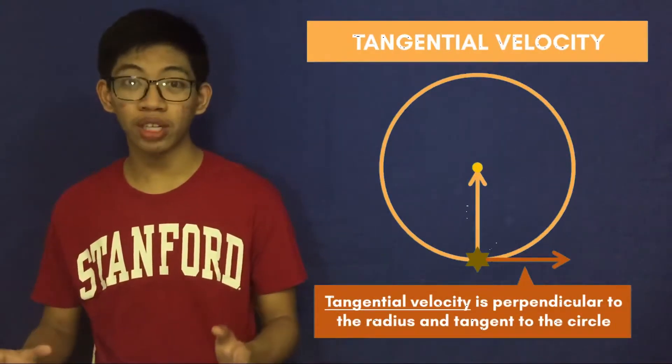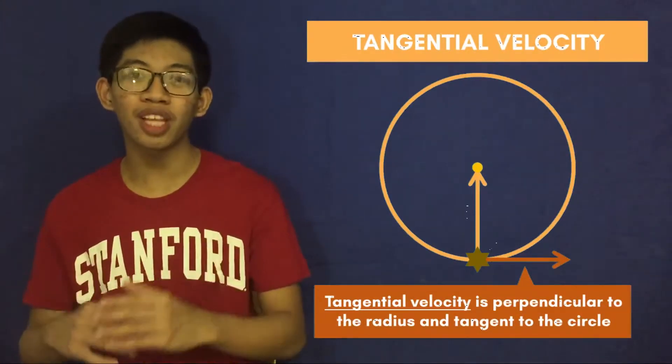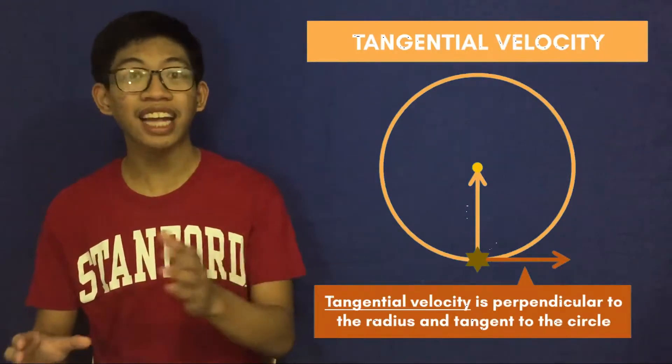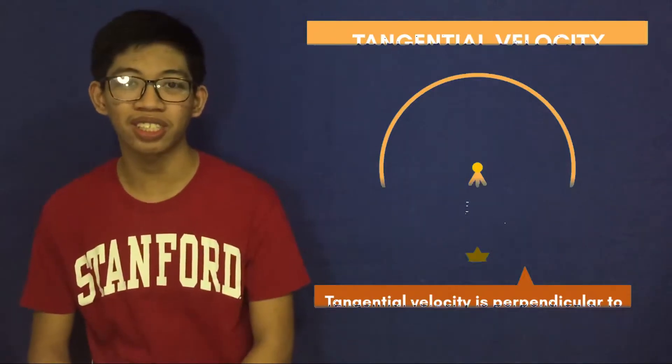We should also know that tangential velocity is a velocity perpendicular to the radius of the circle. You may also see it as a line tangent to the circle. That's why it's called tangential.